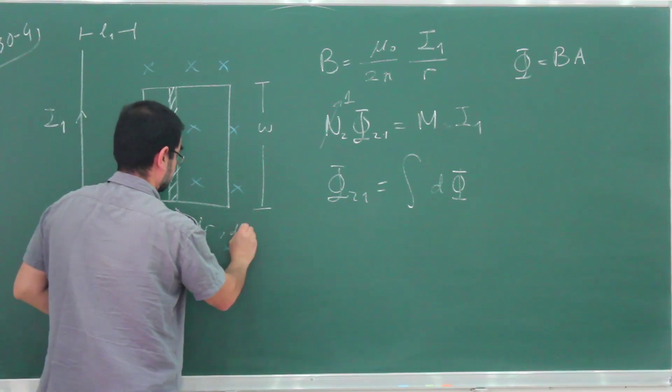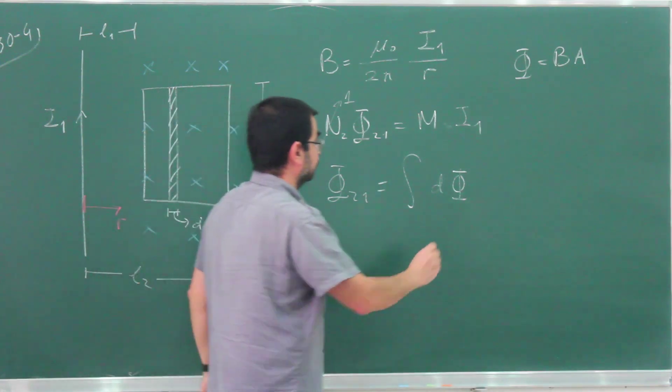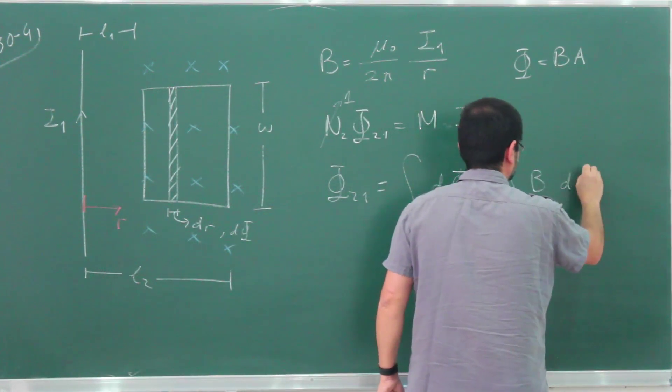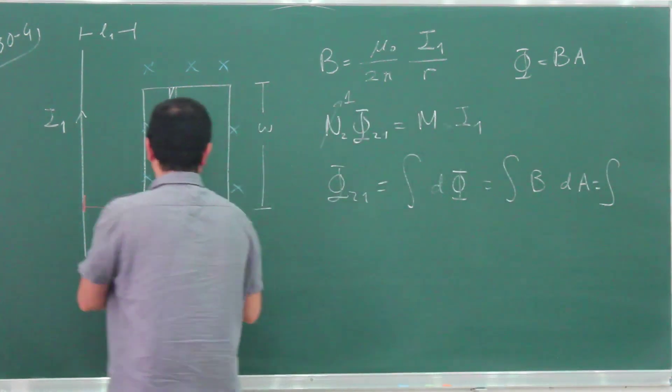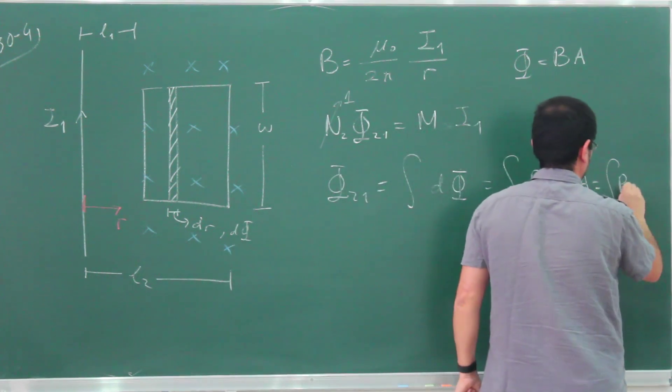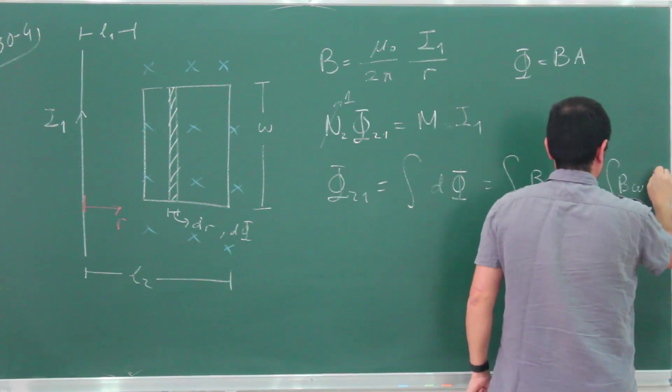So this little dΦ is the magnetic field times the area, and that area is simply dr times W. So dΦ equals B·W·dr.